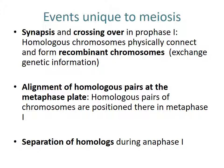Students sometimes think meiosis is just mitosis twice because it produces four cells, but there are events unique to meiosis. In prophase 1, we have synapsis — where homologous chromosomes get together — and crossing over, where homologous chromosomes exchange genetic information and form recombinant chromosomes. Also unique to meiosis is the alignment of homologous pairs at the metaphase plate, where homologs pair up randomly and independently. And separating those homologs during anaphase 1 is another event unique to meiosis.